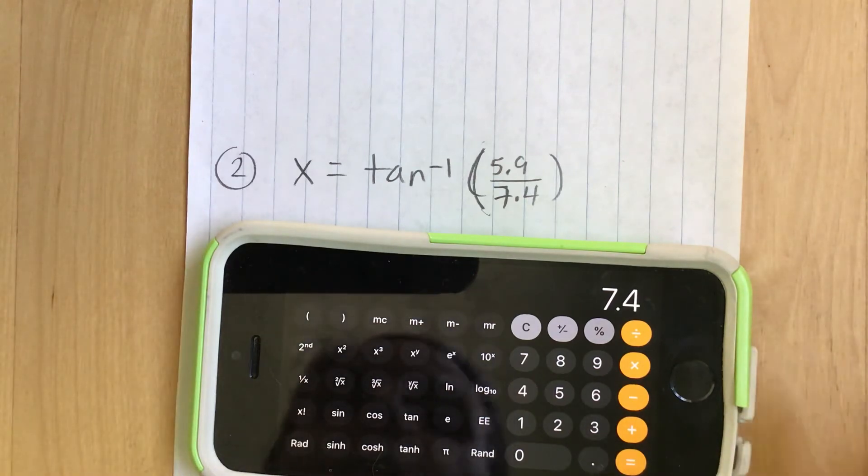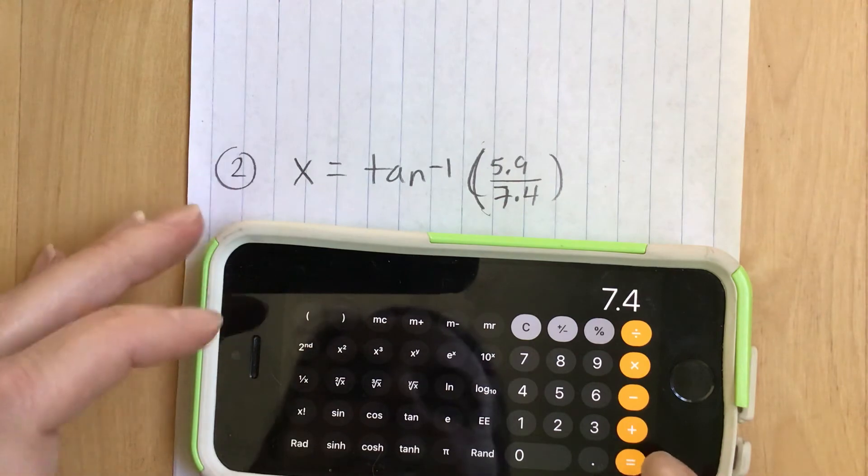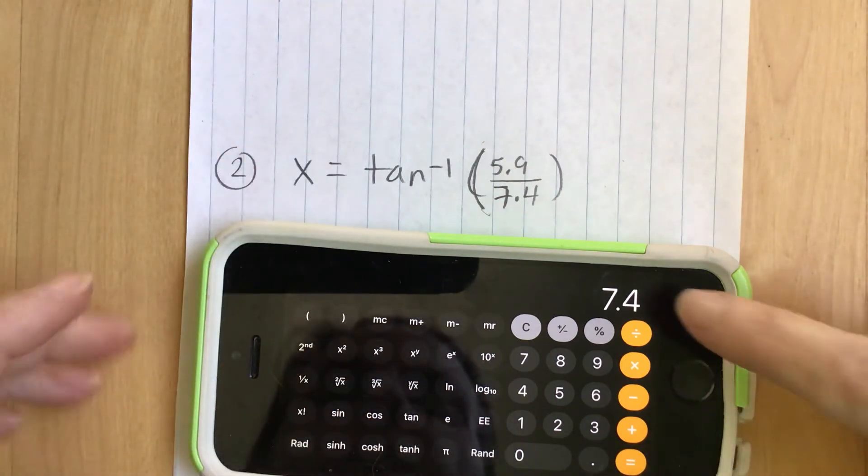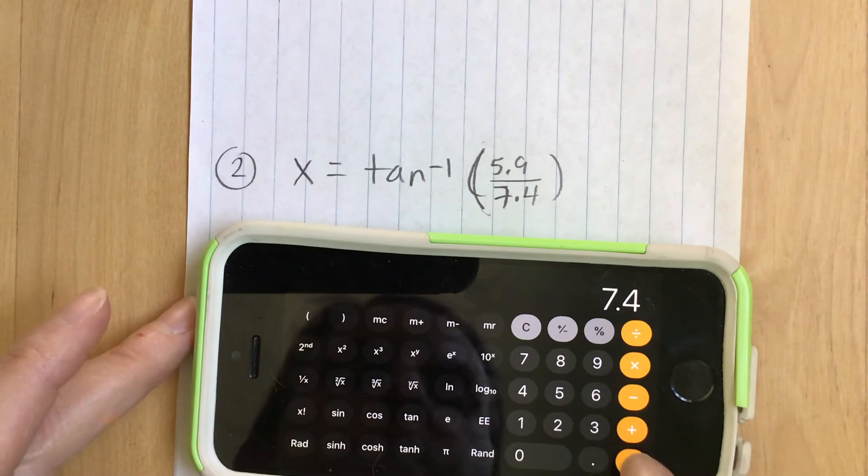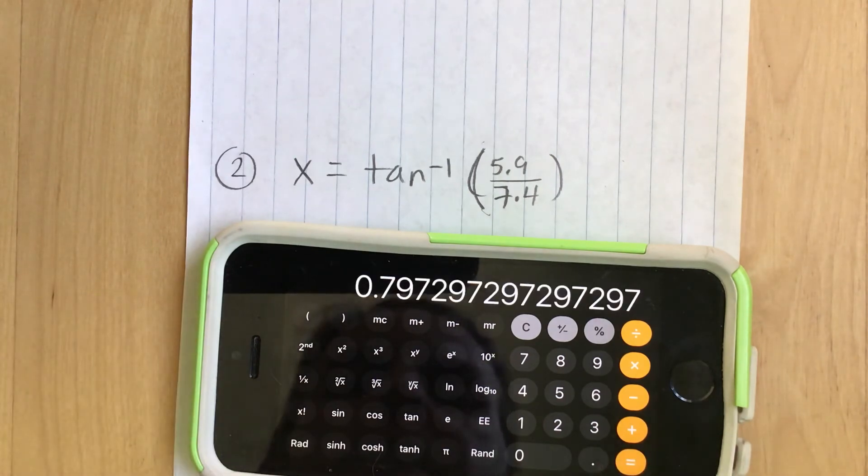What we have to do is we have to do 5.9 divided by 7.4. Now I'm going to hit the equals button because I actually want to do this calculation first because if I then went to tan negative one it would probably only do it on that 7.4. So hit equals. We got this big repeating decimal. That's okay.